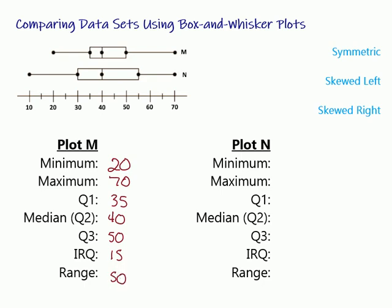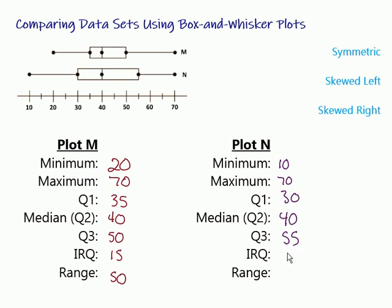Now let's do the same thing, but this time looking at plot N, and then we'll see what we can observe about the two different box and whisker plots. Minimum for plot N is at 10. Maximum over here at 70. Q1, the first quartile, is 30. The median, or second quartile, is also at 40. The third quartile is 55. IQR — the length of the box — is Q3 minus Q1, so 55 minus 30 equals 25. And finally, the range: 70 minus 10 equals 60.